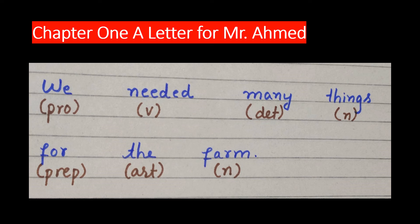We needed many things for the farm. We is the pronoun. Needed is the verb. Many is determiner. Things is the common noun. For is the preposition. The is article and farm is a common noun.